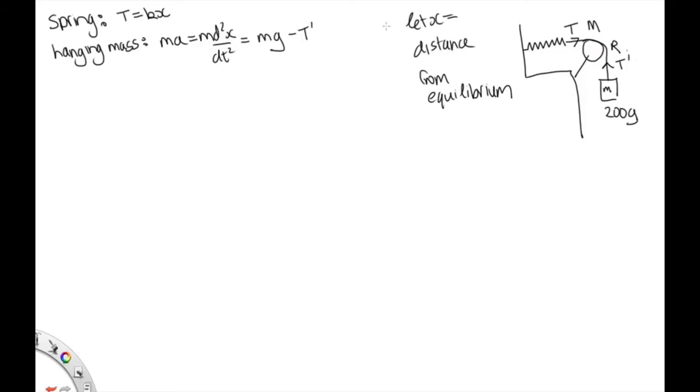And then we've also got an equation for our pulley. So Newton's second law for torques, we've got that the torque is equal to r cross f, which is equal to I alpha. So we can write this. The distance from the point that it's pivoted about is just the radius. The force which is acting on it is the difference between these two tensions. So it's the T dash minus T. And that is equal to I, which is a half capital M, r squared alpha, which is d squared theta dt squared.